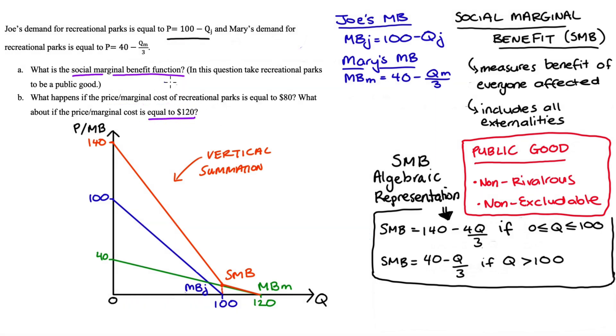In this case let me draw it in you can see the price is too high for either Joe or Mary to purchase the recreational park. So if we left the provision of our recreational parks up to the free market in this case it just wouldn't be produced.